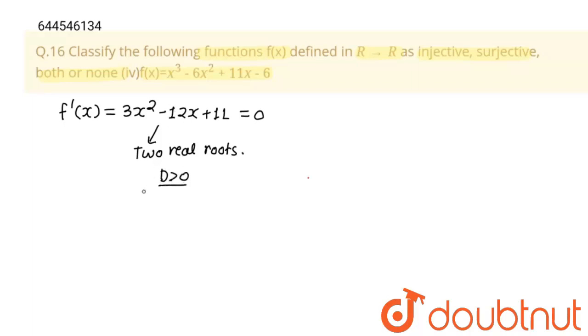Let's find it. D = 144 minus 4 × 3 × 11. And here D will be equals to